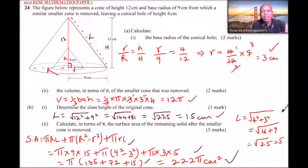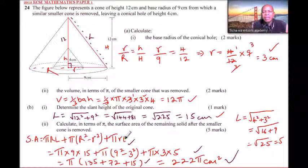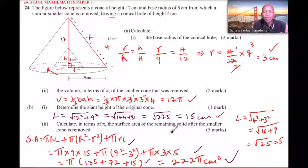This is a straightforward question as long as you remember similarity and enlargement — the ratio of corresponding sides gives a constant. You also need the Pythagorean theorem, which you learned even in primary school, and the formulas for volume and surface area of a cone learned in Form Two. With all that, you should be able to get 10 out of 10 marks on this question. Thank you for watching.